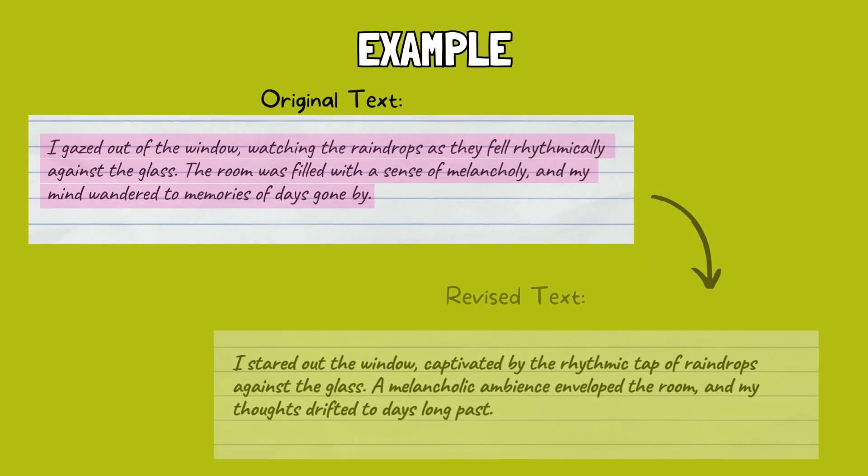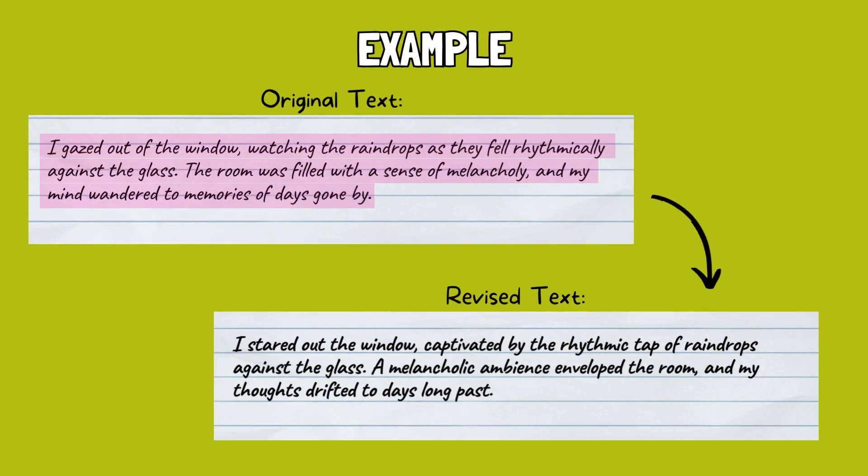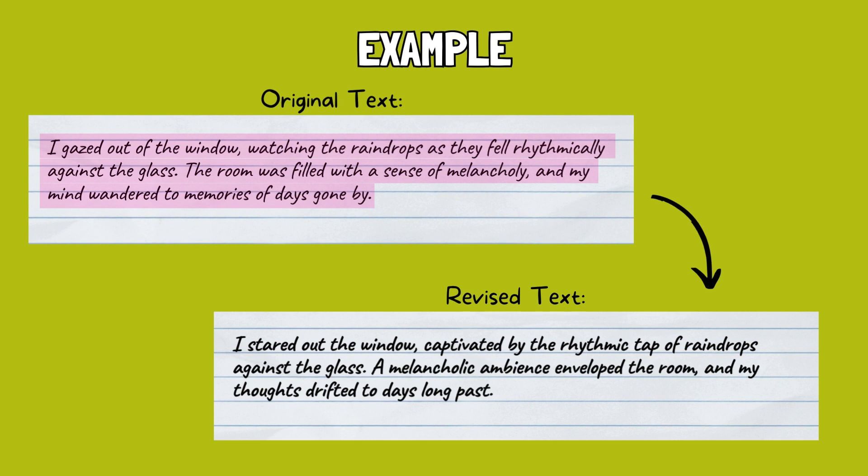Take a look at this example. When reading a passage silently, it might seem atmospheric. However, when read aloud, you might notice a potential improvement. By reading aloud, you might realize that the revised version has a better flow. The choice of active verbs and refined phrasing contribute to a more immersive and vivid description.